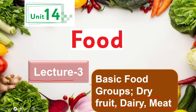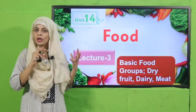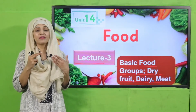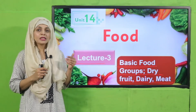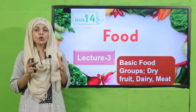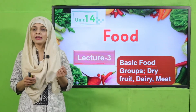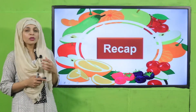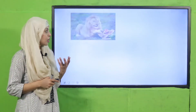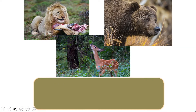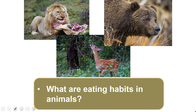My dear students, from the last few lectures we have been studying that food gives energy to plants, animals, and human beings. Now we will look at how human beings have different food groups, what they are, and how we get energy from them. But before that, let's quickly recap the previous lecture. Look at the pictures and tell me about eating habits of animals - very good, some eat meat, some eat plants, and some eat both plants and animals.